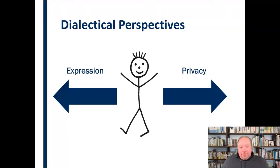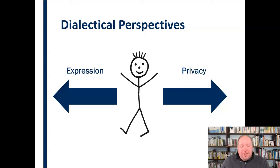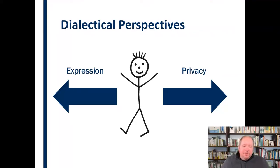Another dialectic is expression versus privacy. Sometimes we want to be known by others — we want to get things off our chest, share ideas, talk to other people. Other times we want to keep things to ourselves and don't necessarily want other people to know things about us. So that pendulum swings back and forth between expression and privacy. That's all really complicated for us individually.